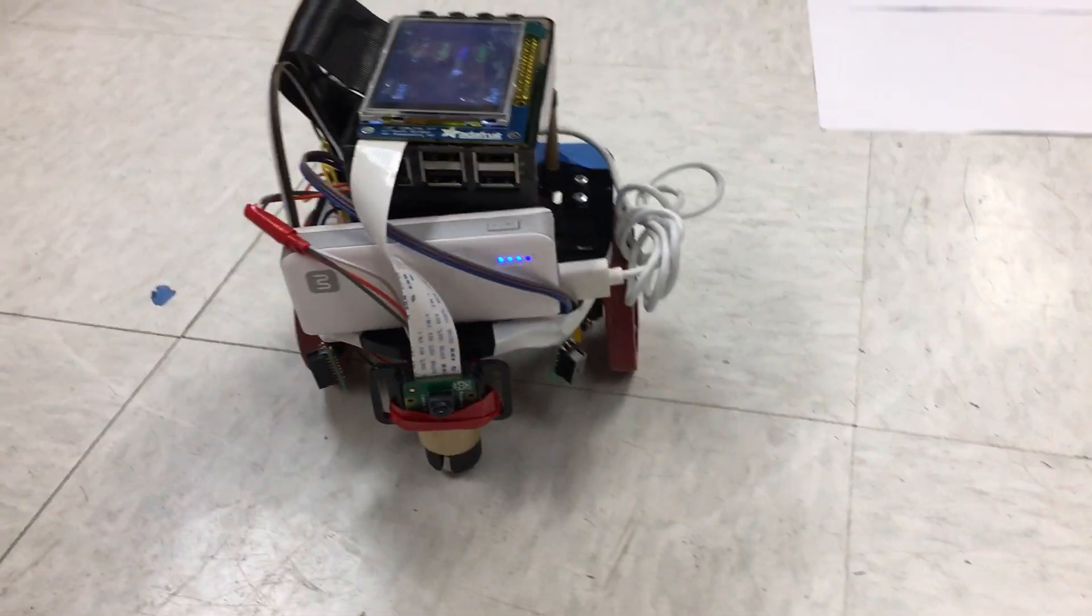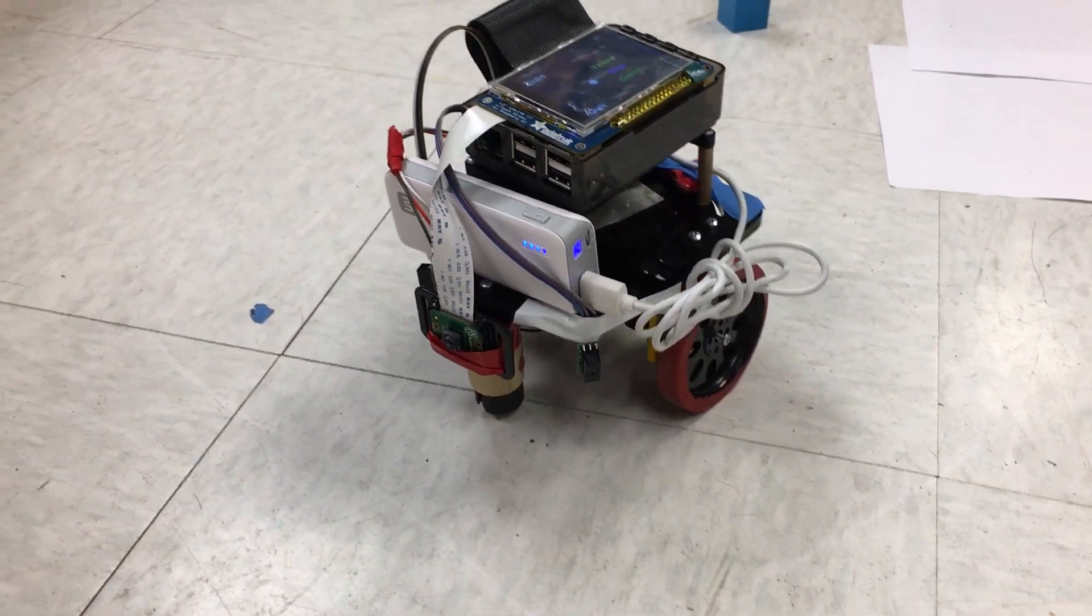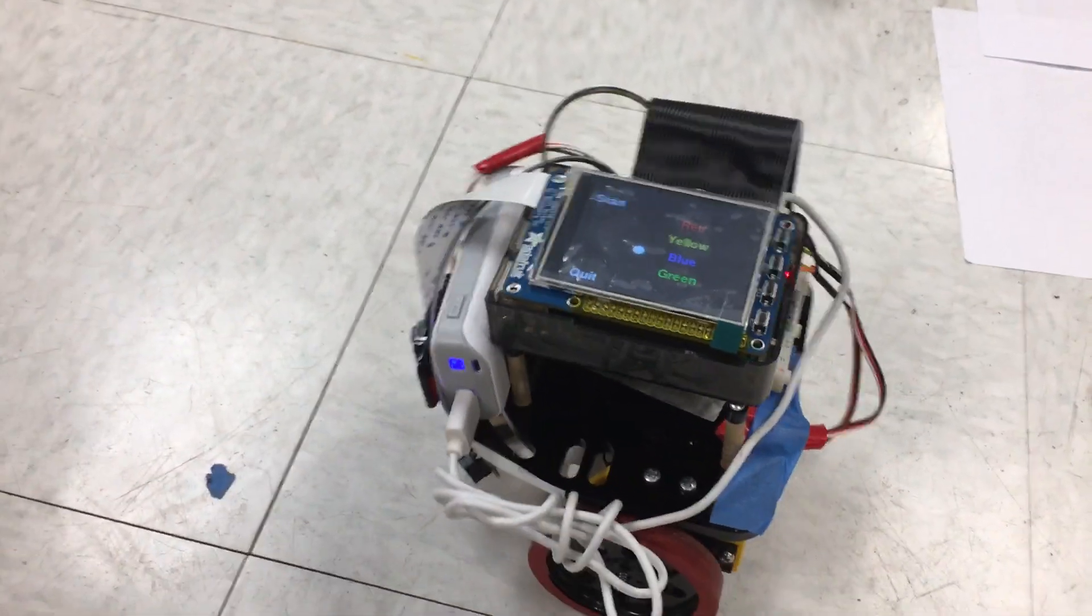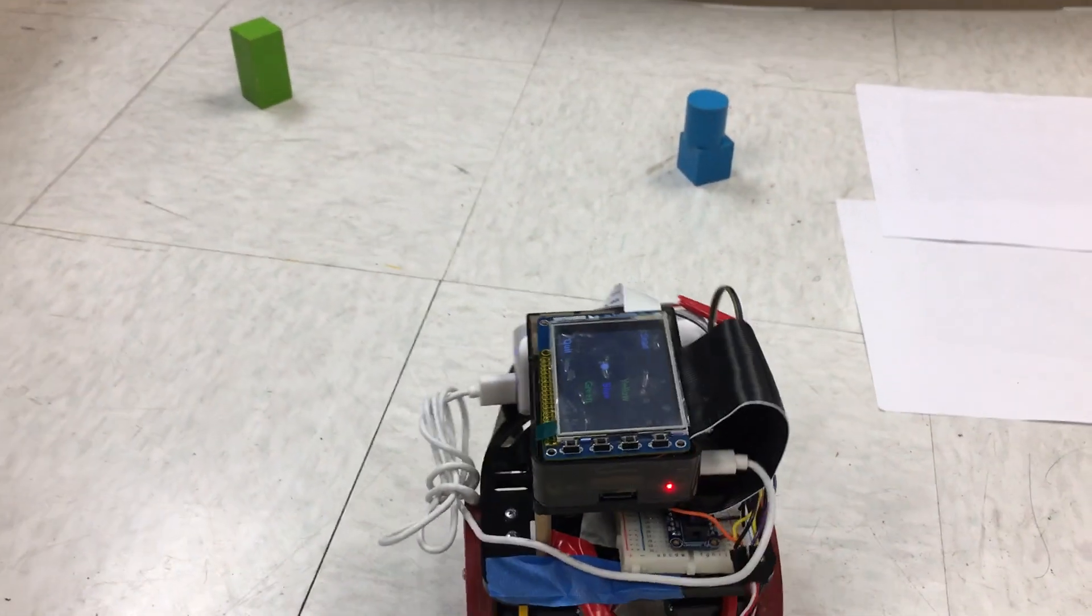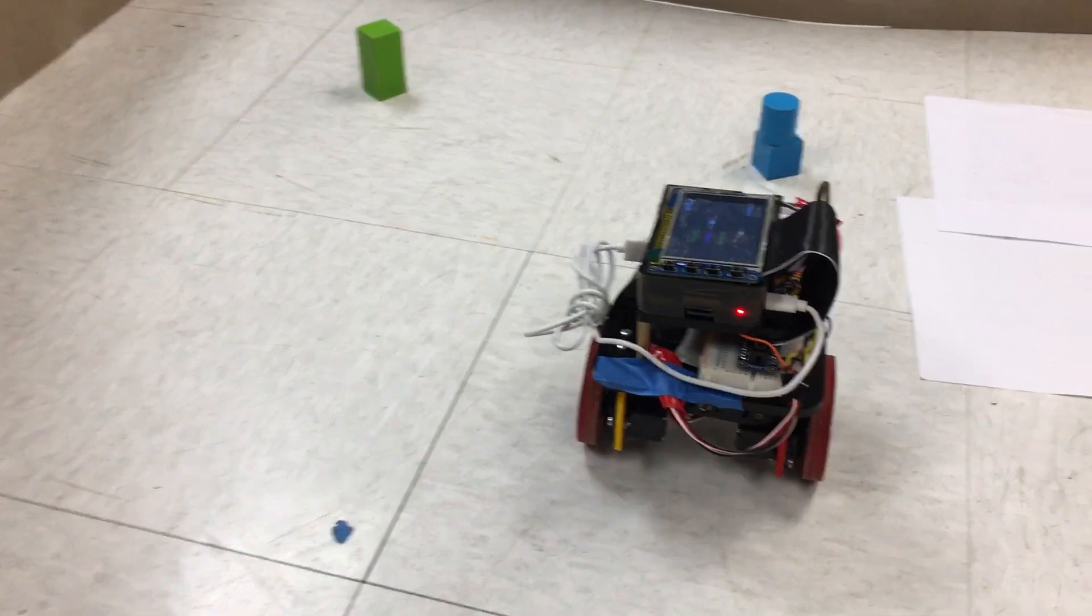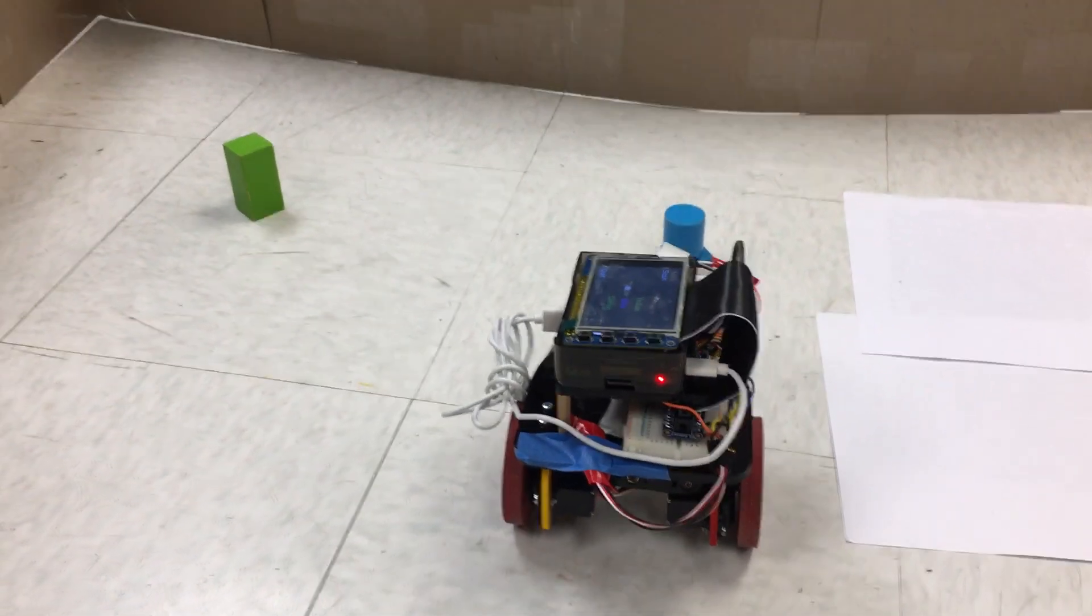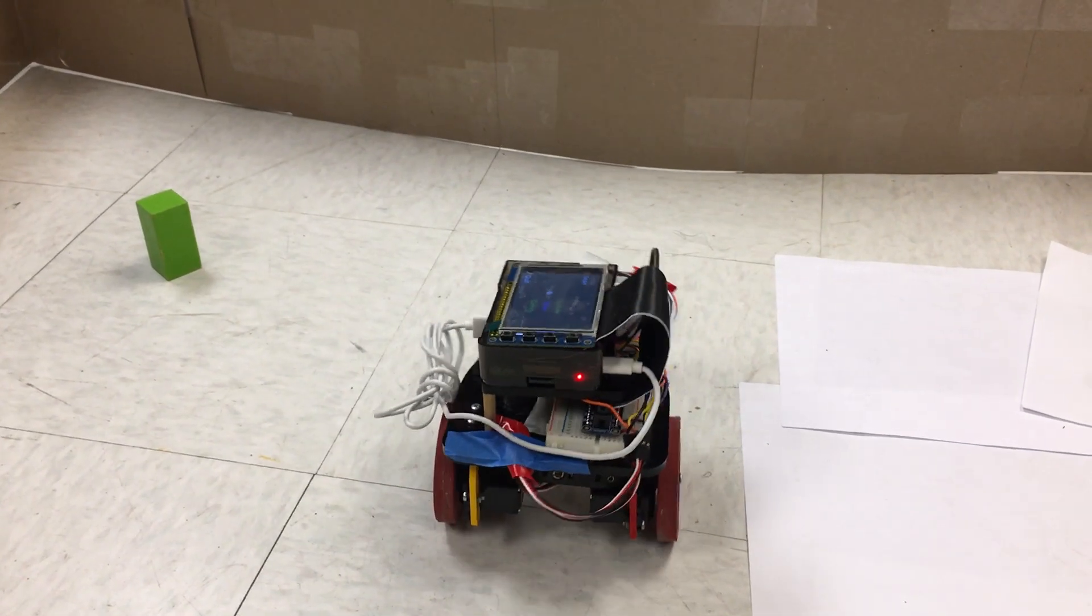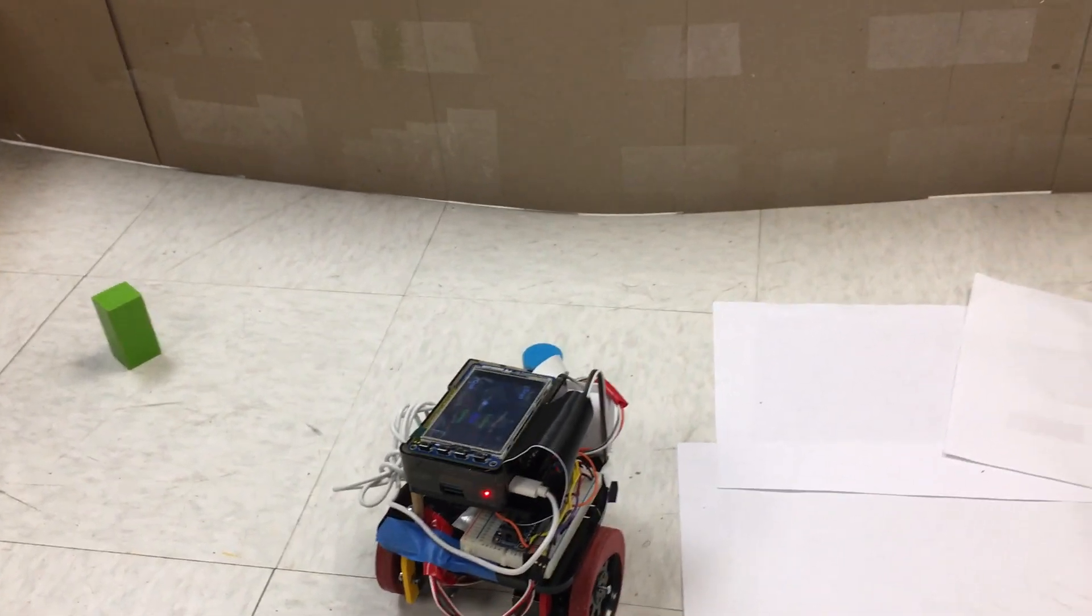And we also use OpenCV to do image processing. And now it's looking for the second object, which is blue. And the robot found it.